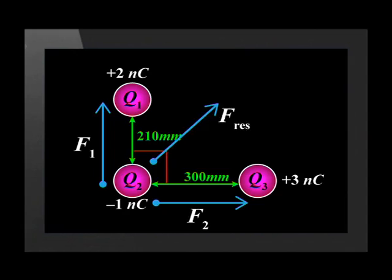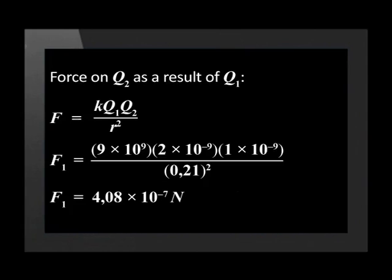The question asks for the resultant electrostatic force on Q2 as a result of the other two charges. We first use Coulomb's law to calculate the electrostatic force F1. To calculate the force on Q2 as a result of Q1, we substitute the charge into the equation. This gives us F1 as 4.08 times 10 to the negative 7 Newtons. This force acts upwards, since the charges are in a vertical plane.